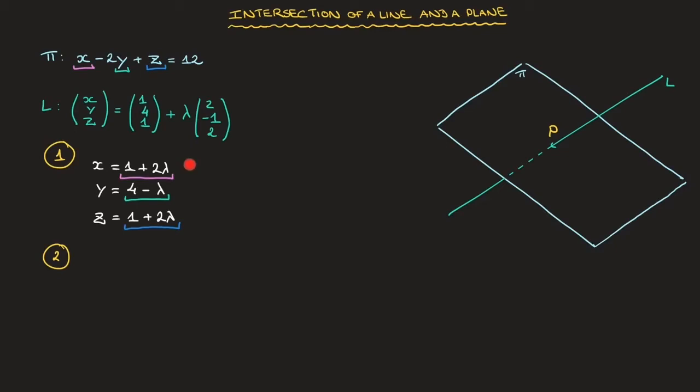Rewriting this plane's equation using these three parametric equations leads to 1 plus 2 lambda, so that's x, minus 2 times 4 minus lambda, which is y, plus 1 plus 2 lambda, and that's z. And all of that equals 12. So to be clear, 1 plus 2 lambda was the expression we had for x, 4 minus lambda was the expression we had for y, and 1 plus 2 lambda was the expression we had for z. At this stage, we have an equation for lambda. The goal now is to simplify this left-hand side as much as possible, and then solve this equation for lambda.